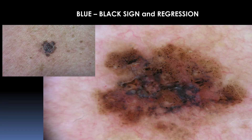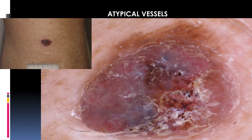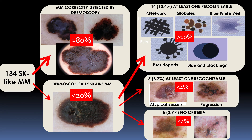Another very important feature is the presence of regression. In this case, you can also see the blue-black and regression features, so you can at least suspect that this could be an inflamed lesion that needs to be ruled out as a melanoma. Another very important feature is the presence of atypical vessels — any kind of vessel different from a hairpin vessel should be taken into account when facing these keratotic tumors. In summary, in our series, most cases — 80% — were easily diagnosed by dermoscopy, but in less than 20%, you need to pay careful attention to detect at least one recognizable criterion.